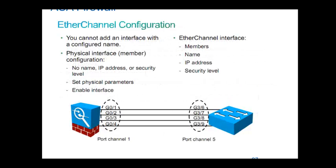We are going to give IP address, name, and security level — everything on the port channel interface, PO1, PO2 — not on the physical interface. The physical interface just needs to be enabled with 'no shutdown'. Then go to the port channel interface and specify which physical interfaces belong to this port channel.